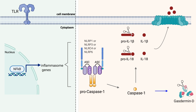Caspase-1 also cleaves a host protein called gasdermin D. Cleaved gasdermin D moves to the cell membrane and forms pores, causing the cell to die in an inflammatory form of programmed cell death called pyroptosis. Pyroptosis is an effective way to kill intracellular pathogens, and it can also recruit other immune cells to the site of damage. Current research is adding more nuance to these pathways and a better understanding of what kinds of signals lead cells to fully undergo pyroptosis.